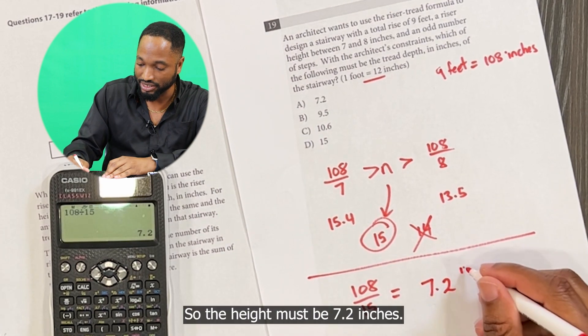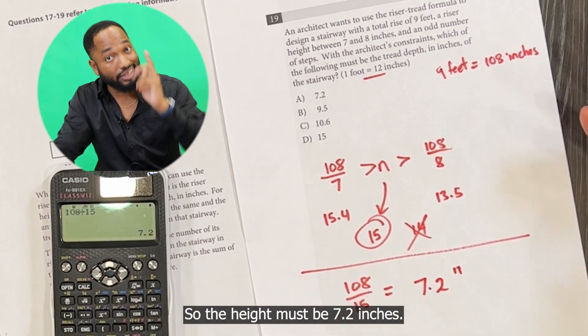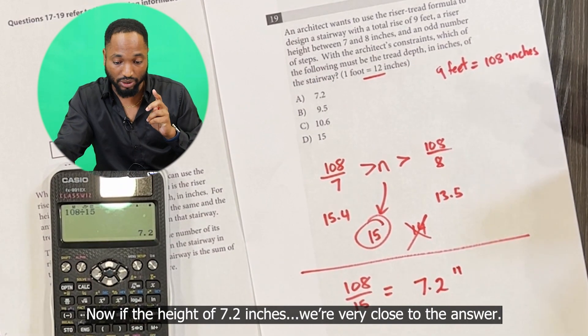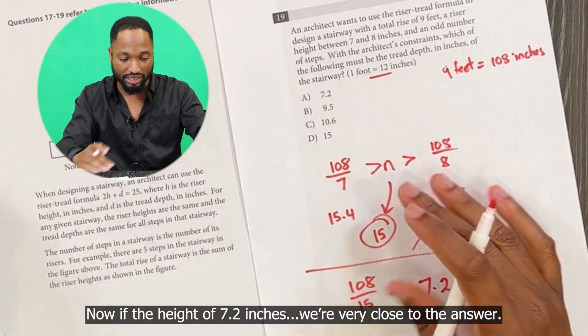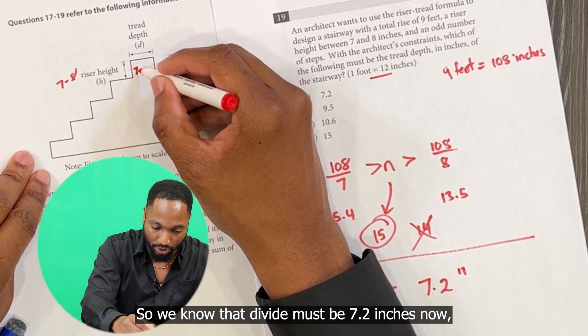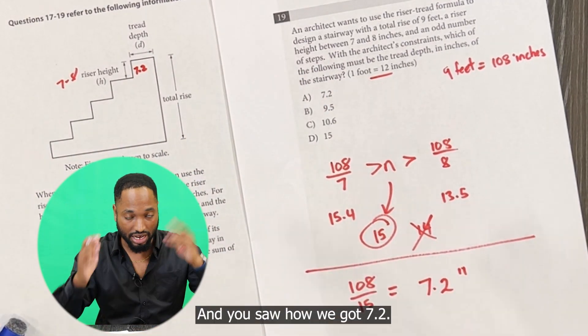Lovely. So the height must be 7.2 inches. If the height is 7.2 inches, we're very close to the answer. So you know that the height must be 7.2 inches now, which is a number between 7 and 8, and you saw how we got 7.2.